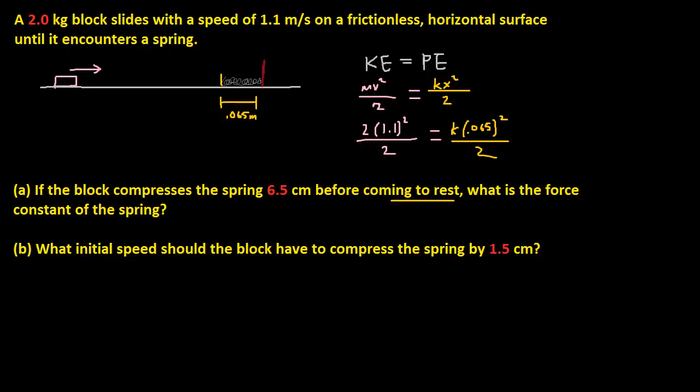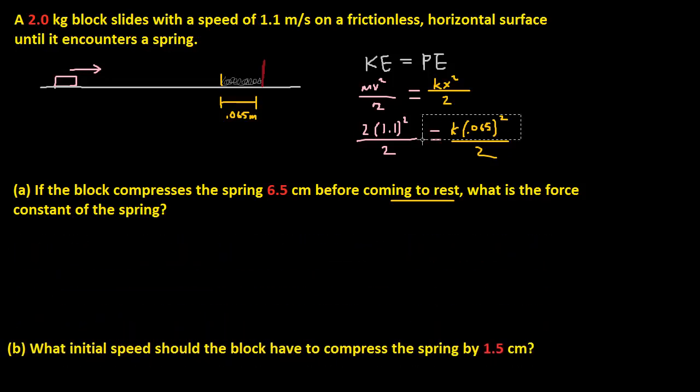Okay, so now we just solve for k. Because that's the force constant. So the 2 cancels out. And we're just left with this. So if we just divide this on each side, we get that's going to equal to k. So let's do that on the calculator.